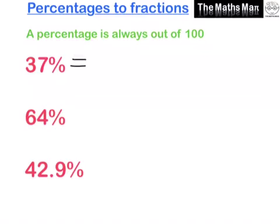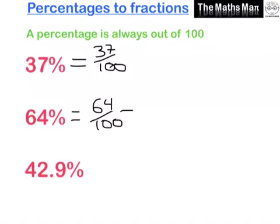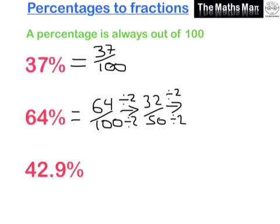For 64%, it's 64 over 100. However, this time we can cancel our fraction down because 64 and 100 are both even numbers, so we can simplify further. This gives us 32 over 50 by dividing by 2, and we can do this again to get 16 over 25.